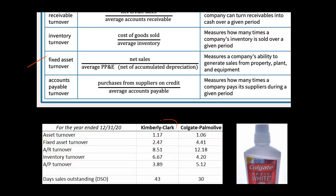Kimberly-Clark and Colgate-Palmolive were pretty close on asset turnover — each generated slightly over $1 of sales for every dollar of average total assets. When it came to fixed asset turnover, Colgate-Palmolive clearly had more of an advantage; they were doing a better job using their property, plant, and equipment to generate sales.